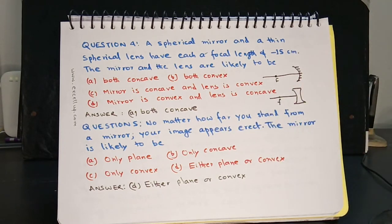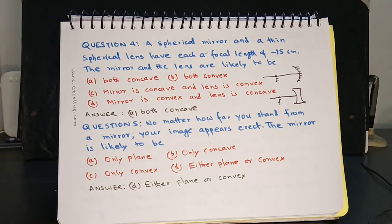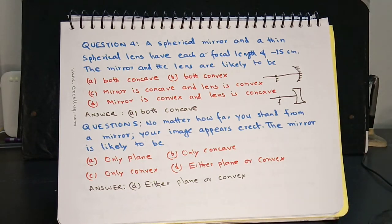Question 5: No matter how far you stand from a mirror, your image appears erect. The mirror is likely to be: a) only plane, b) only concave, c) only convex, d) either plane or convex. The answer is d) either plane or convex, because in both plane and convex mirrors the image is always formed behind the mirror and is therefore always erect.